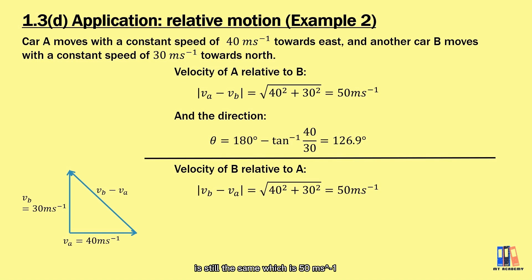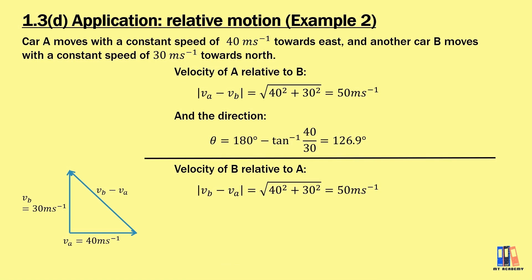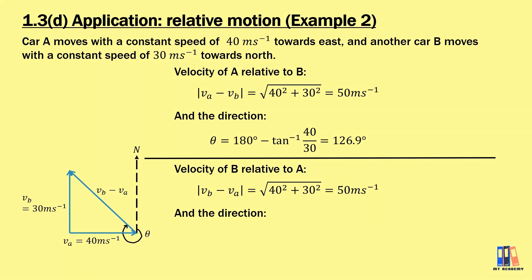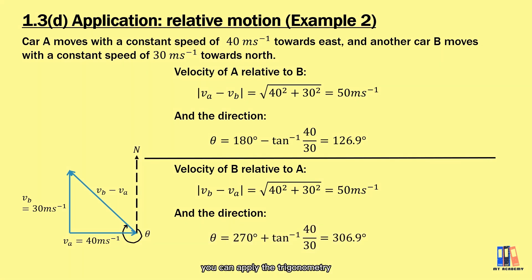The magnitude is still 50 meters per second. But for the direction, we need to redraw the north pole and obtain the new bearing. From the diagram, applying trigonometry gives an angle of 206.9 degrees.